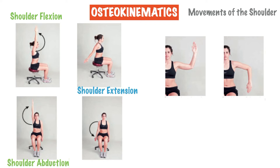Thirdly is shoulder abduction. At first glance this movement may seem similar to shoulder flexion, however there is a notable difference. While seated, shoulder abduction begins with the arm down towards the side and gradually lifts the arm up and away from the body until it is parallel with the side of the head. Fourthly is shoulder adduction. From a seated position we can initiate shoulder adduction by beginning in a position of shoulder abduction, then gradually lowering the arm downward so that it's brought closer towards the body.